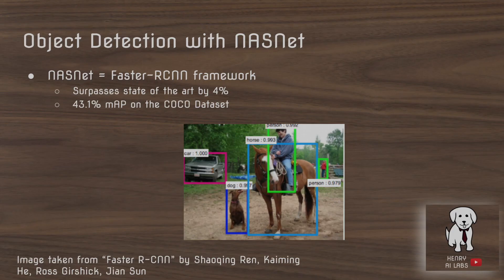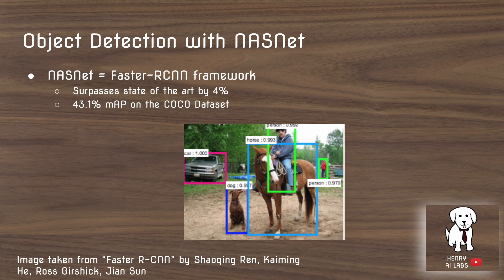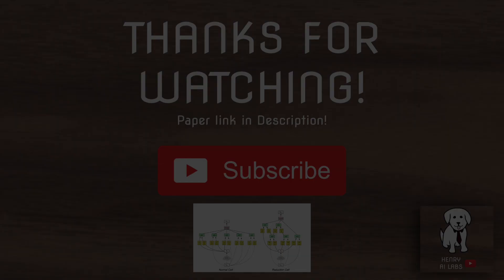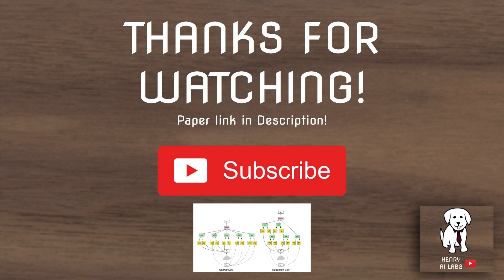Another interesting application of neural architecture search is using the discovered features for object detection, by combining the region proposal network from Faster R-CNN with the neural architecture search image features. Thanks for watching this video on neural architecture search — the paper link is provided in the description. Please subscribe for more videos on deep learning.